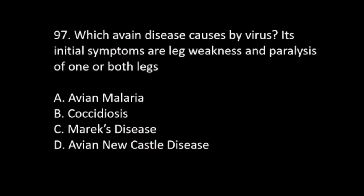Number 97. Which avian disease is caused by a virus? Its initial symptoms are leg weakness and paralysis of one or both legs. A. Avian Malaria. B. Coccidiosis. C. Marek's disease. D. Avian Newcastle disease.